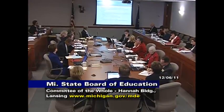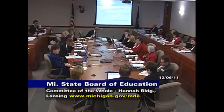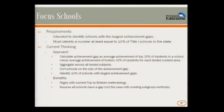For focus schools, the requirement is to identify schools with the largest achievement gaps. Our current thinking is to calculate an achievement gap as the average achievement of the top 30% of students in a school minus the average achievement of the bottom 30% of students for each tested content area, then aggregate across all tested subjects, sort schools on the size of the achievement gap, and identify the 10% of schools with the largest achievement gaps. This aligns with the current top-to-bottom methodology and reduces complexity.